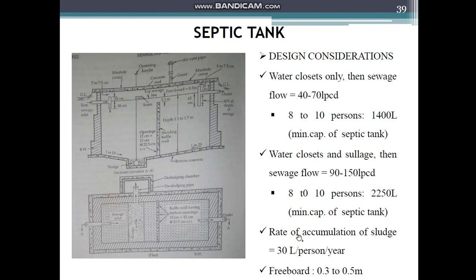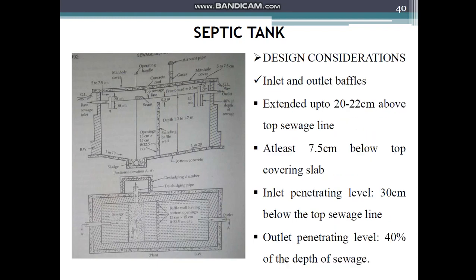The rate of accumulation of sludge is 30 liters per person per year, which is very useful in deciding the volume of sludge deposited. Freeboard in the tank is usually around 0.3 to 0.5 meters.